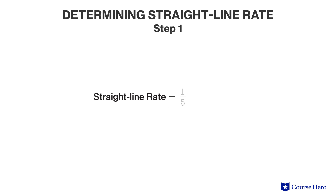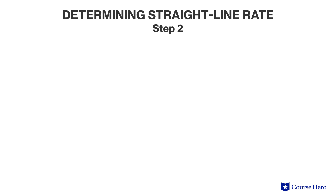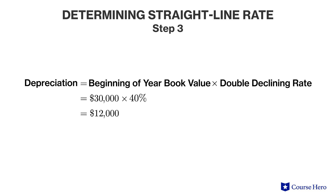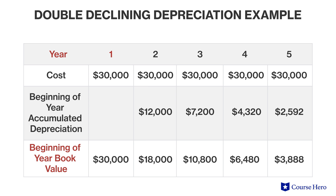First, the company will determine the straight line rate, which is 20% — representing how much of the asset's depreciable cost would be depreciated each year under the straight line method. The straight line rate is then multiplied by two. Third, the double declining rate of 40% is applied to the asset's book value. In year one, the book value is the same as the historical cost; however, in subsequent years, the book value will be the historical cost net of depreciation already taken. The company will then continue until the asset reaches its residual value, which acts as a floor amount below which it cannot be depreciated. In the final year, the depreciation expense must bring the book value down to the residual value and not below.